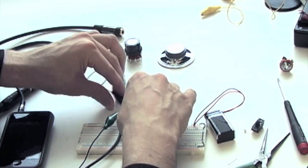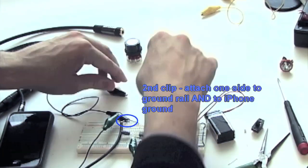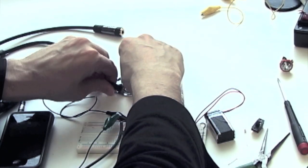Connect one end of the black alligator clip to both the ground from the iPhone and the ground rail of the breadboard. Connect the other end of this black clip to one speaker terminal.